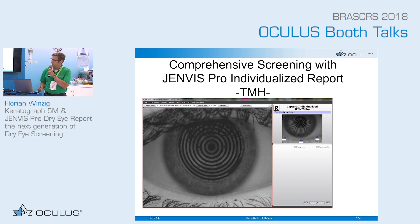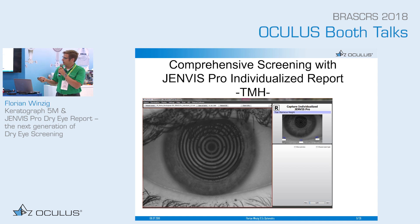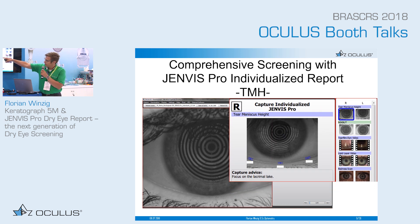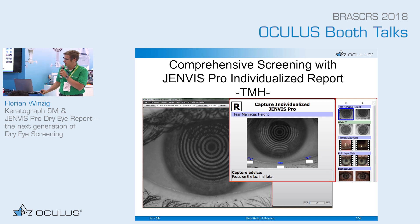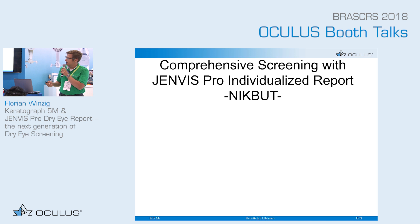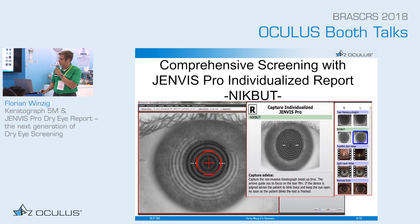Now I want to walk through the Genvis Pro individualized report in detail. Here we are in the capture session. On the side you see the live image, and there is a hint for the technician. We have thumbnail images to focus on the area of interest, and below that a capture advice which tells the technician where the patient should look and where to keep the camera focused. The second examination is the tear film break-up time without fluorescein.